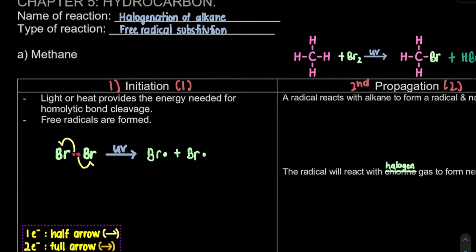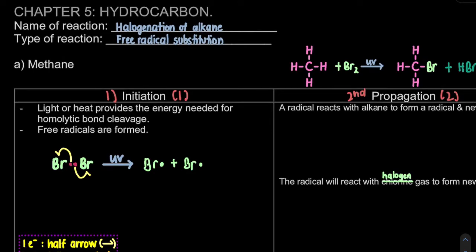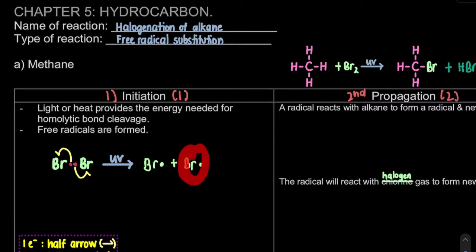Once we form our radical, the radical is very unstable and very reactive. So this radical will react with our alkane. Alkane is a stable compound and very unreactive - that is why for the reaction of alkane, you only learn combustion and halogenation. It can only react with a very reactive species, which is our radical.